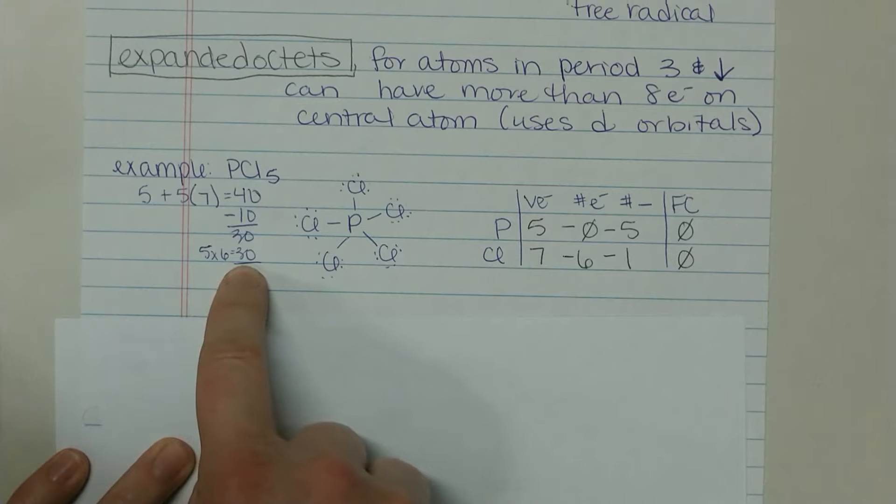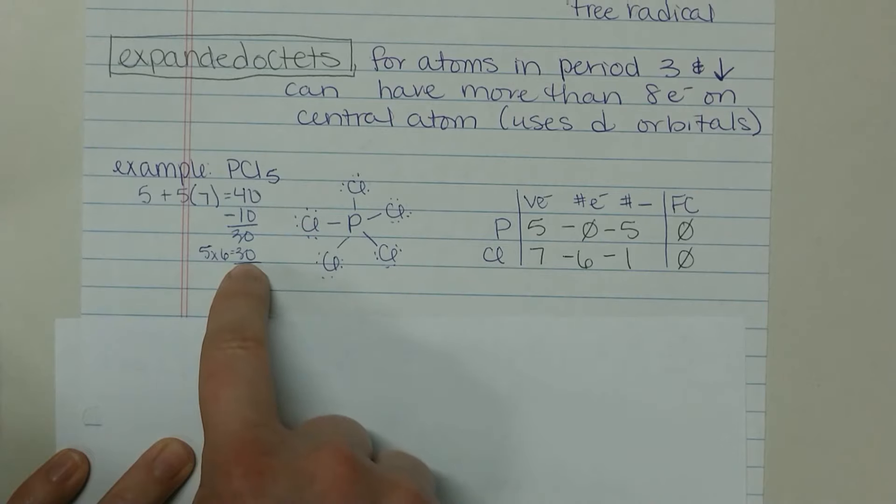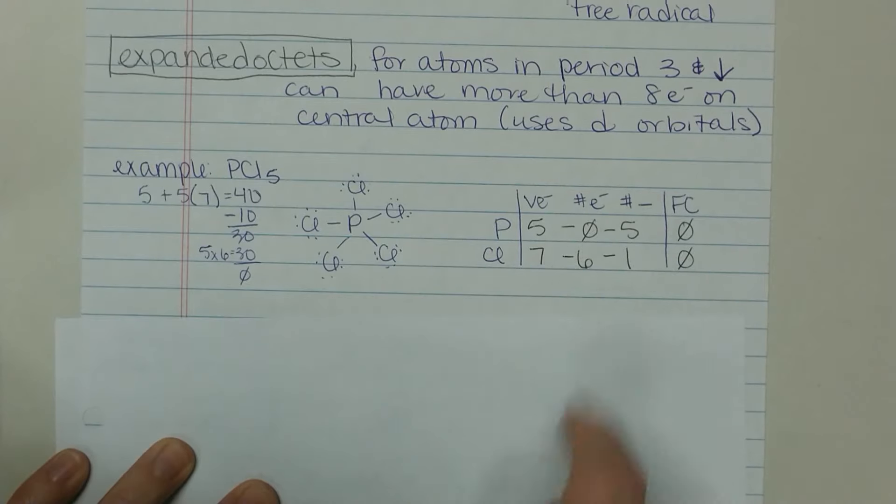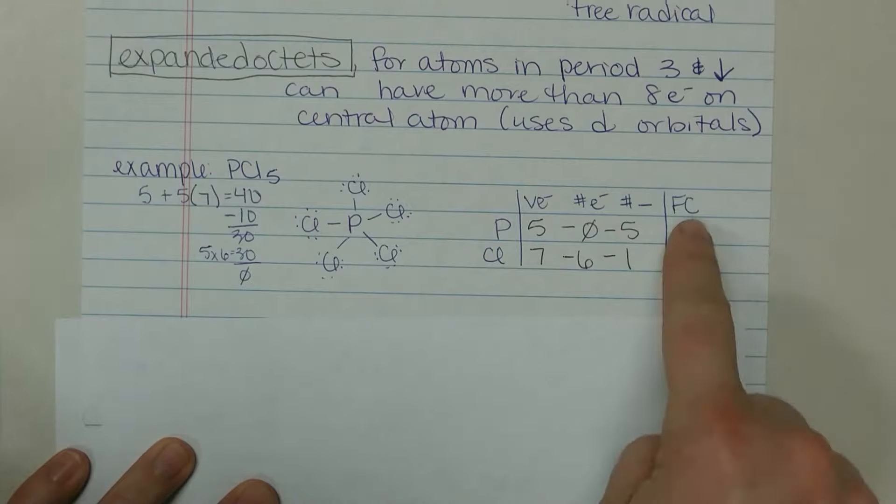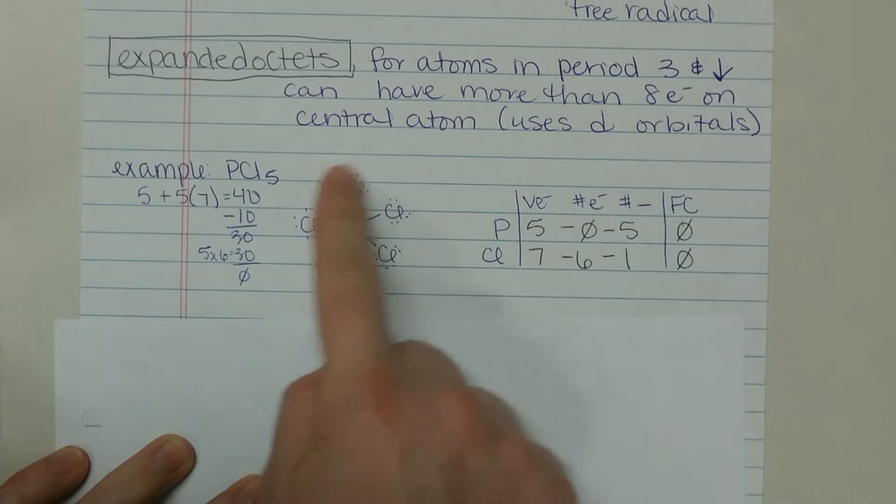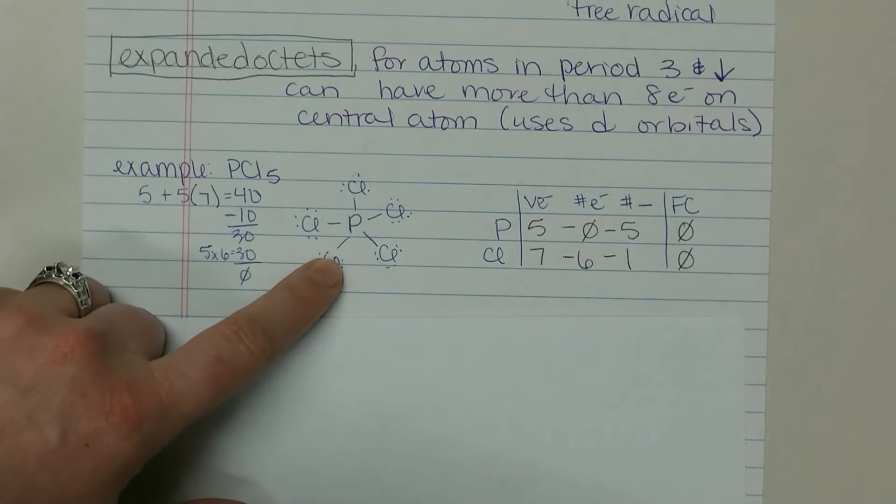Okay, those 10 electrons from the bonds, we have five chlorines that have six valence or six electrons around there as dots for 30. That takes care of all of our electrons. Doing a check of the formal charge, we see phosphorus and chlorine are satisfied and have a formal charge of zero in this Lewis structure. So we can expand it to 10 electrons.